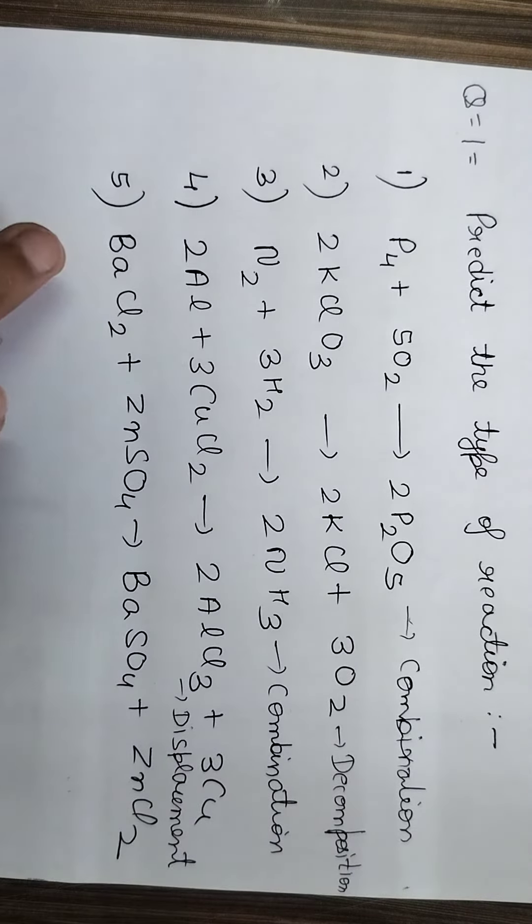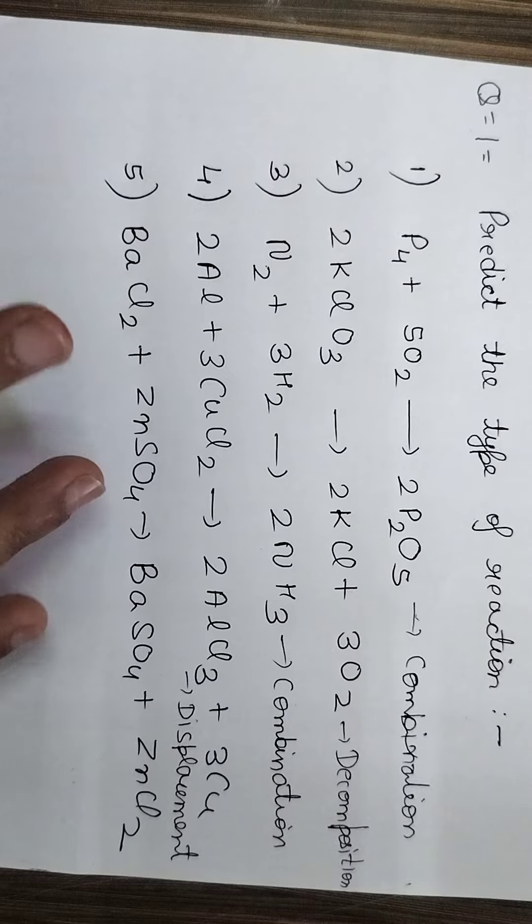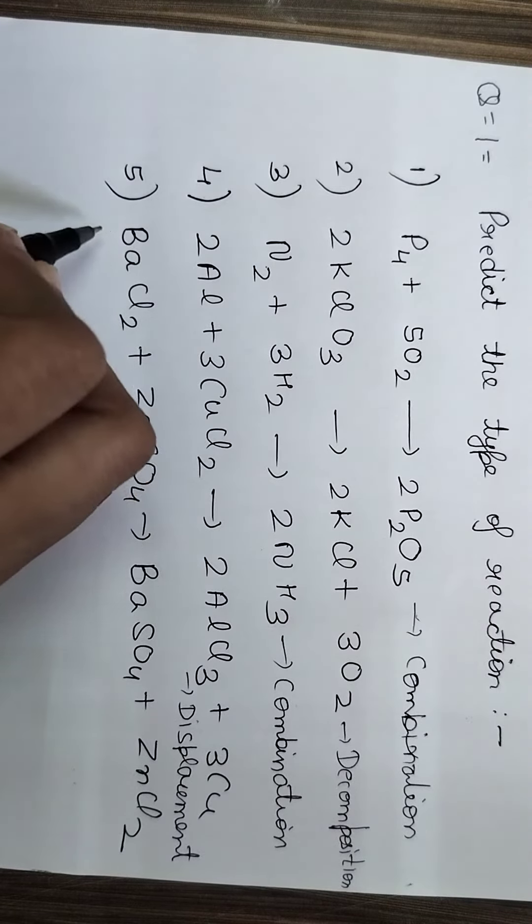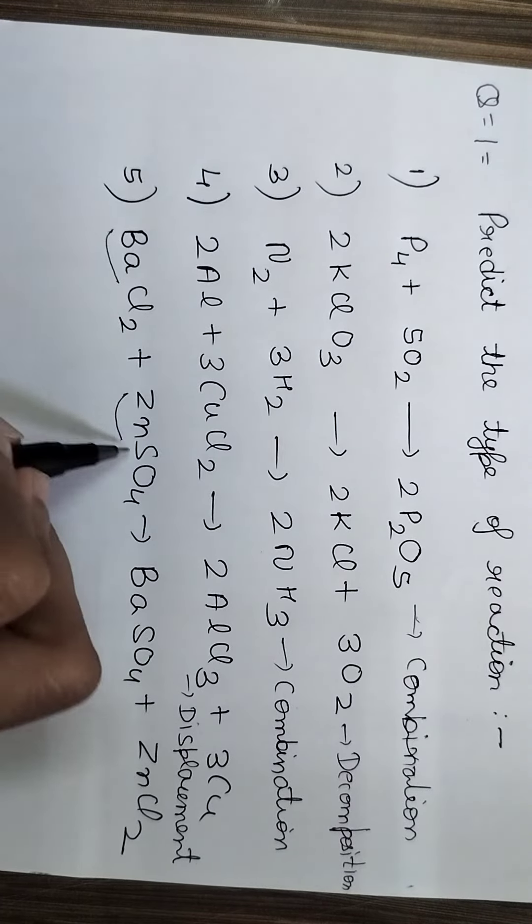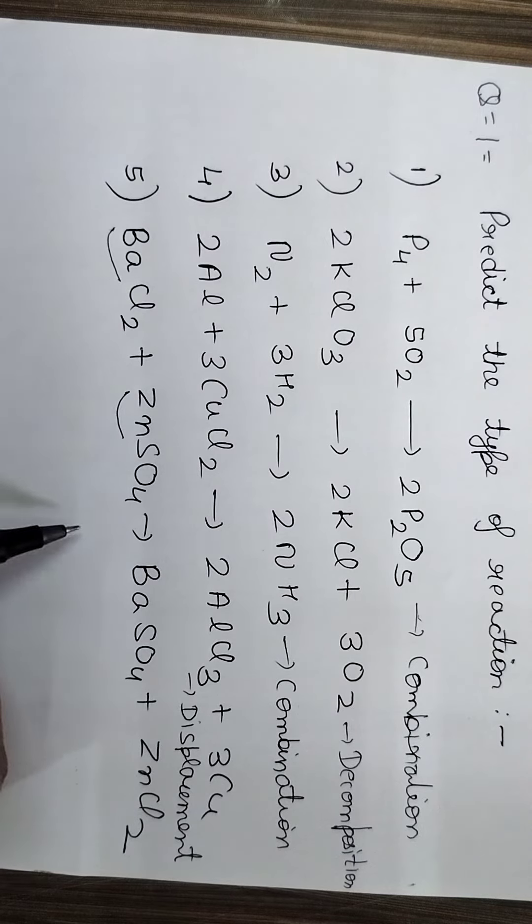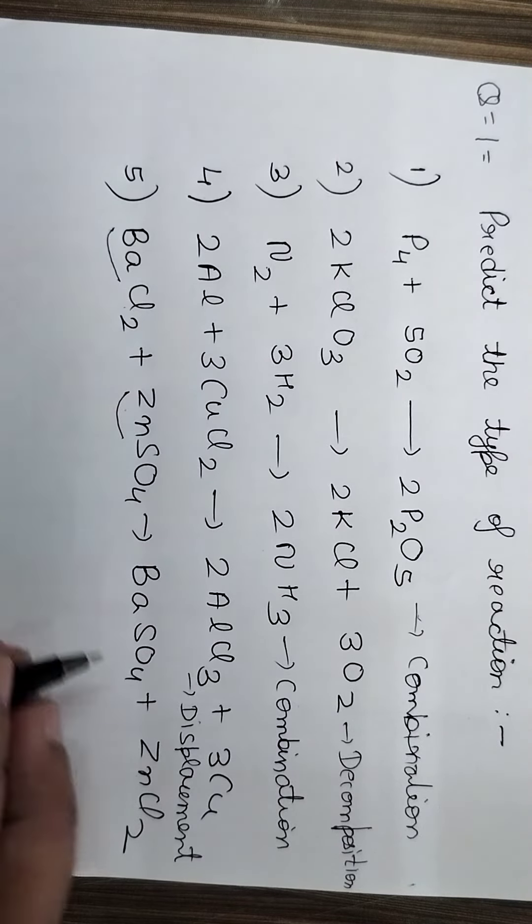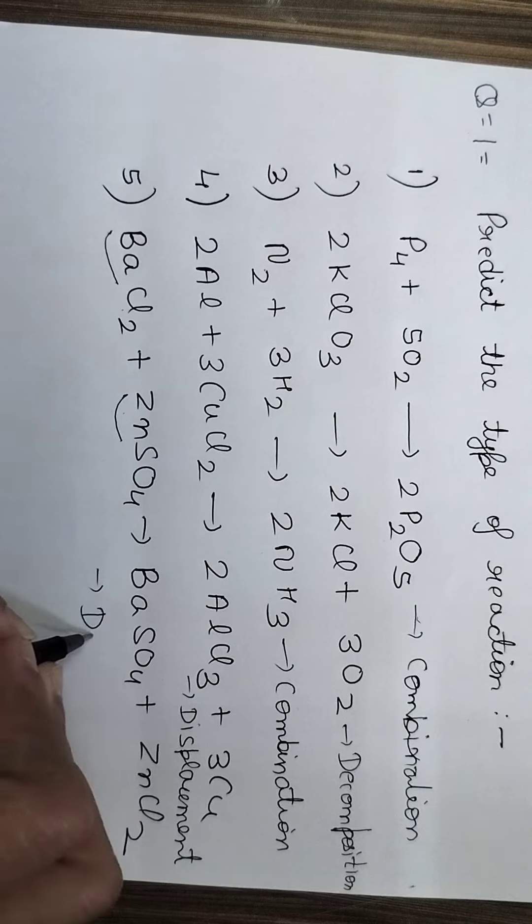And in the last one, there are two salts. So this will be double displacement. As Ba is replacing Zn and Zn is coming in place of Ba. As you can see, Ba combines with SO4 and Zn combines with Cl2. So this is double displacement.